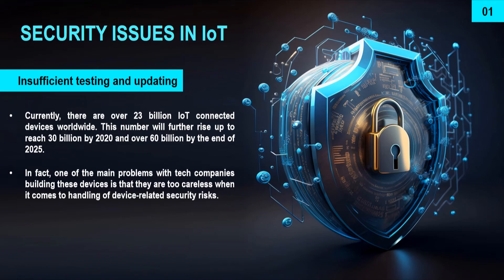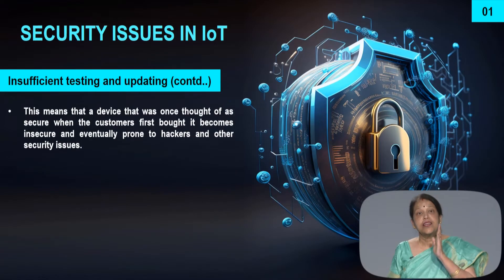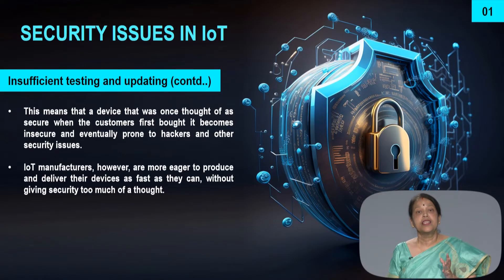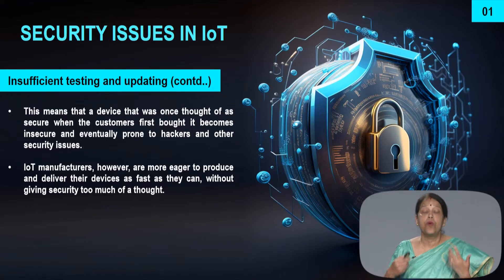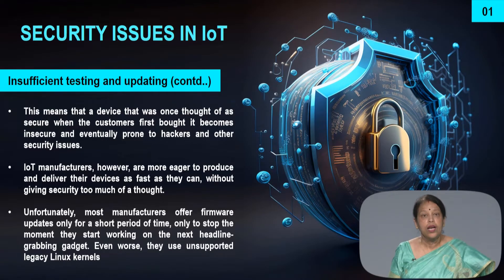One of the main problems with tech companies building these devices is that they are too careless when it comes to handling device-related security risk. They do not give enough updates, and sometimes they do not get updates at all. This means a device that was once thought of as secure when customers first bought it becomes insecure in the following days or years. IoT manufacturers are more eager to produce and deliver as fast as possible, and they do not think about security. Most manufacturers offer firmware updates — third-party updates — but they are sometimes unsupported, and they are sometimes using unsupported legacy Linux kernels, which are not very secure.